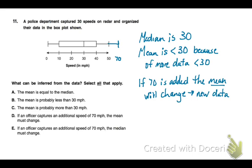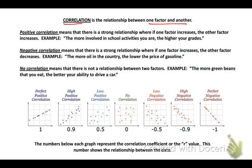So choice a, the mean is equal to the median. That would not be true. Choice B, the mean is probably less than 30. That's true because there's more of my data on the left half or lower than my median number. The mean is probably more. That is not true. D says if an officer captures an additional speed of 70, the mean must change. That is true because 70 would be a new value. See how I have added onto our box plot. So that would pull our mean up. So it would have to change. Now E, if an officer captures an additional speed of 70, the median must change. That is not true. We could still have a median value that would be at 30.